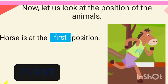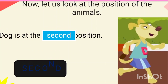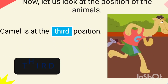Here we can see: horse is at the first position, dog is at the second position — S-E-C-O-N-D, second position. And camel is at the third position — T-H-I-R-D, third position. Students, repeat after me the ordinal numbers: first, second, third. Elephant is at the fourth position.